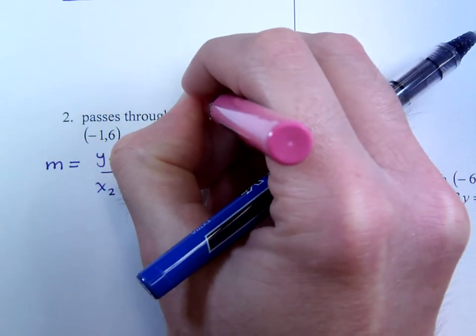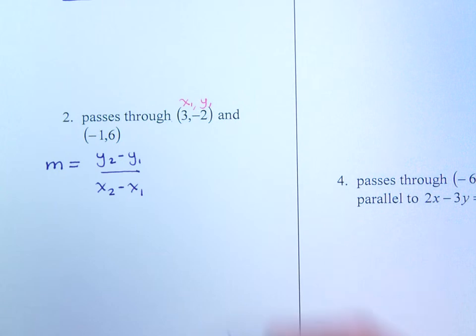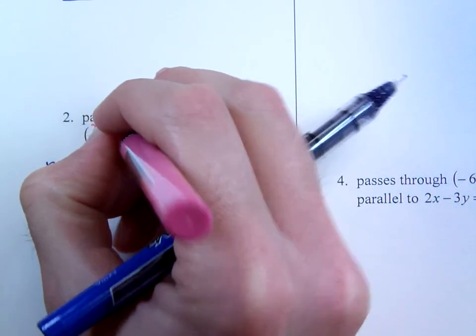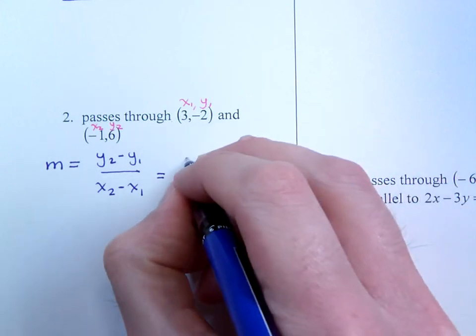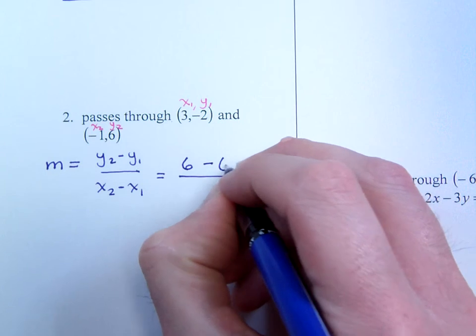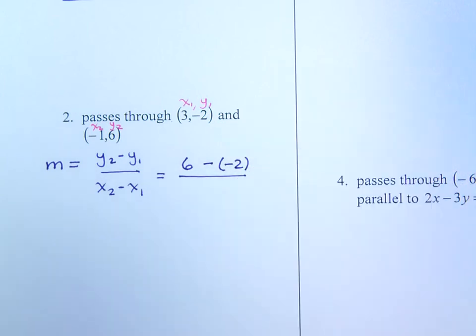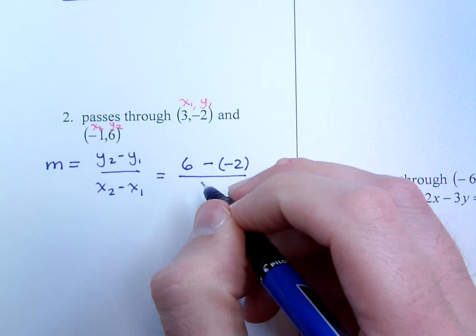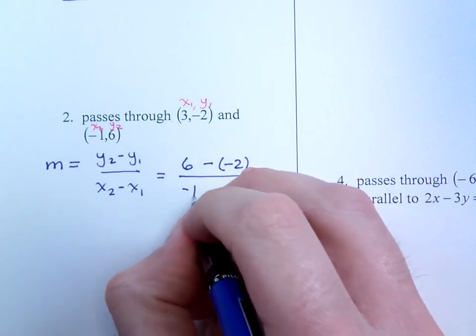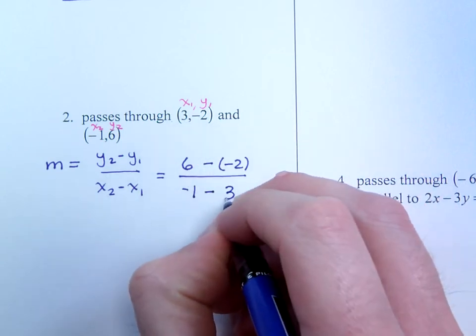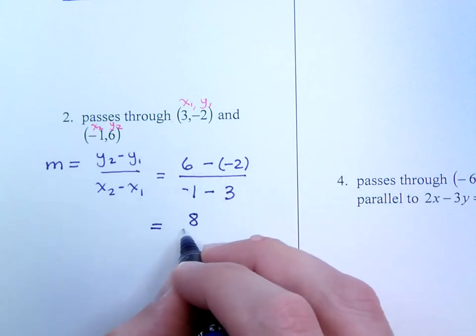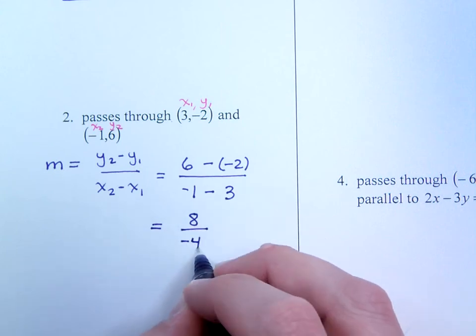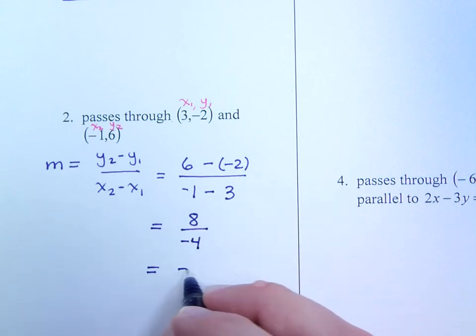I just gave them to you fairly arbitrarily anyway. So we'll call that the first point and that one the second point. So, y2 is going to be 6 minus y1 which is negative 2. Watch your signs when you're plugging into this formula. x2 is negative 1 minus x1 which is 3. So, 6 minus a negative 2 is a positive 8. Negative 1 minus 3 is negative 4. And this just gives you a slope of negative 2.